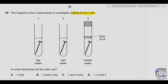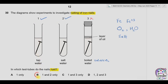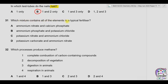Question thirty: in which test tube do iron nails rust? Rusting requires both oxygen and water; salt water accelerates rusting as salt acts as an electrolyte. Test tube one has tap water — oxygen and water are present, so it will rust. Test tube two has salt water — rusting will also occur and faster than in one. Test tube three has a layer of oil and boiled water — oil prevents oxygen from entering and boiling removes dissolved oxygen, so rusting does not occur. Correct options are one and two. Answer is B.